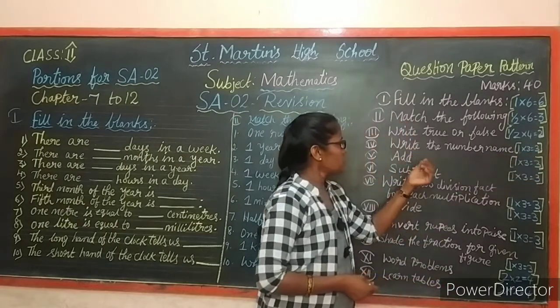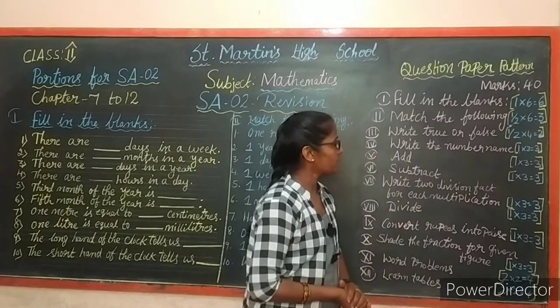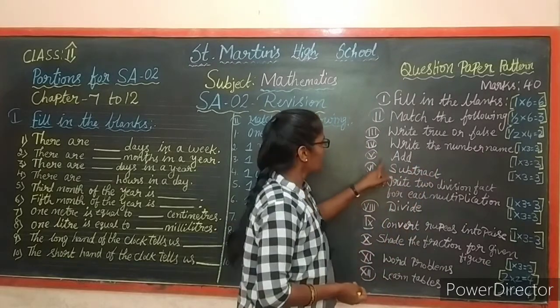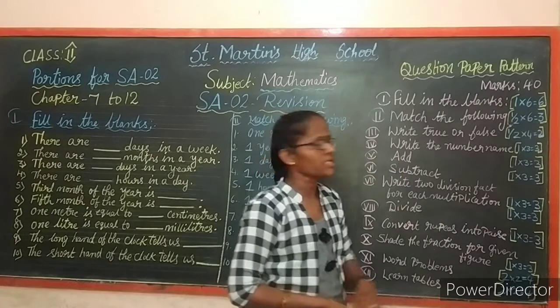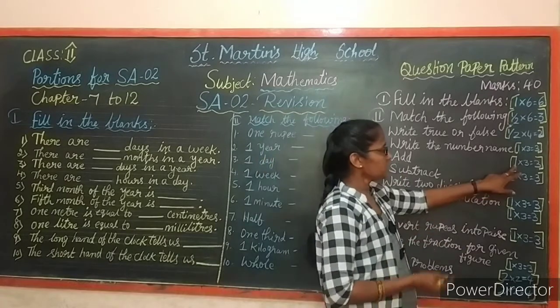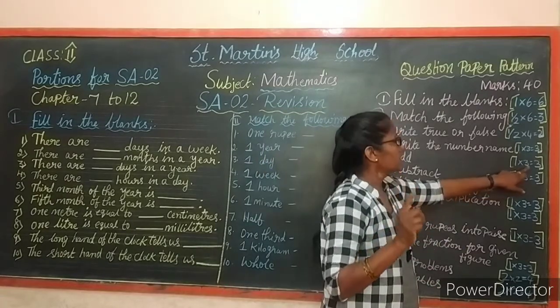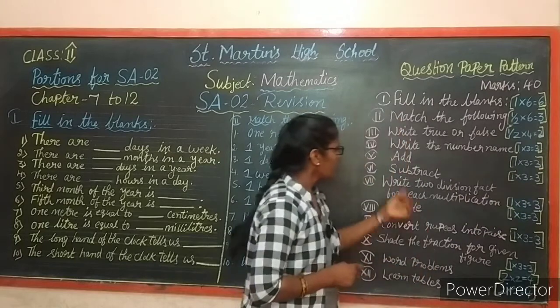Number name means the numbers are given and you have to write them in words. Next, addition - each carries 1 mark, 3 sums will be given, totaling 3 marks.